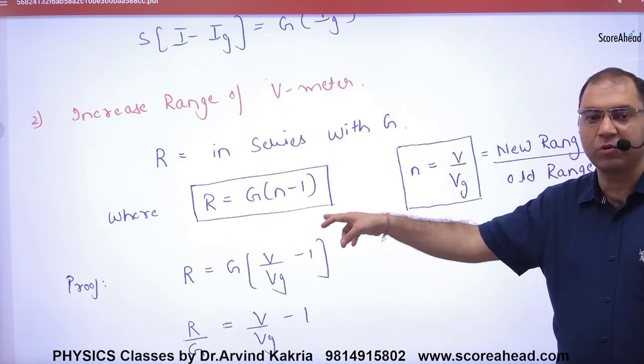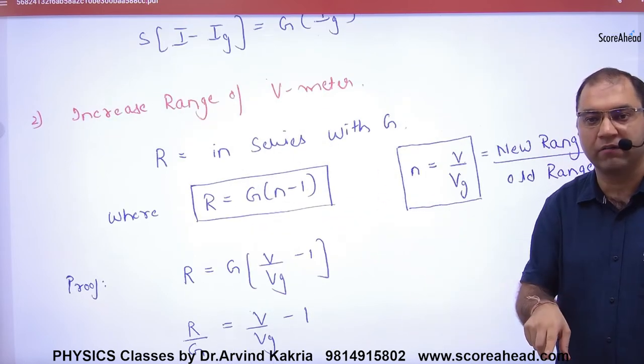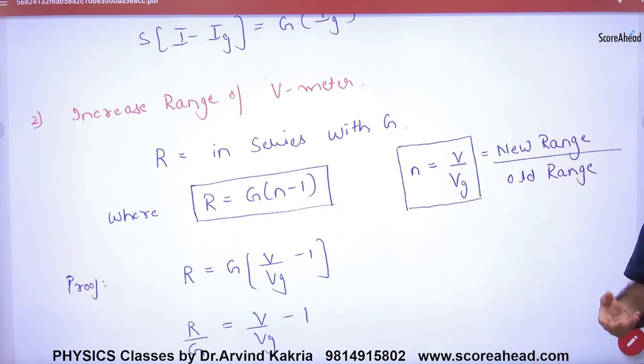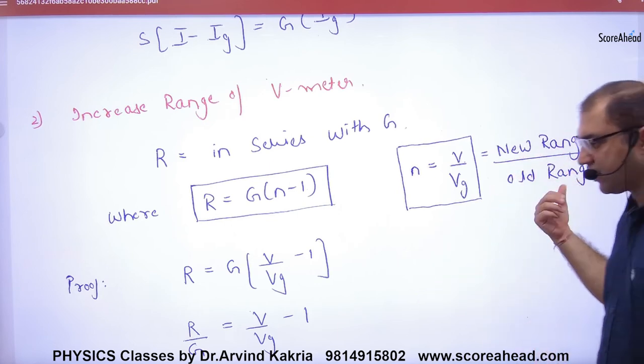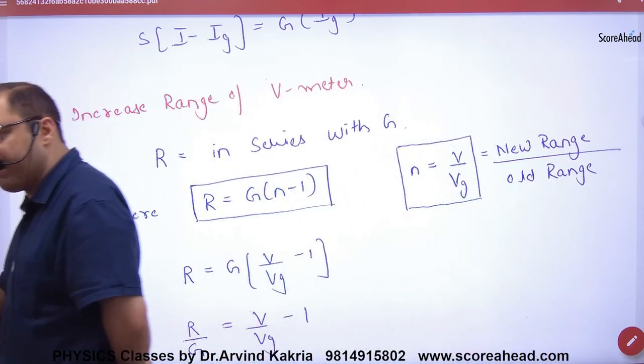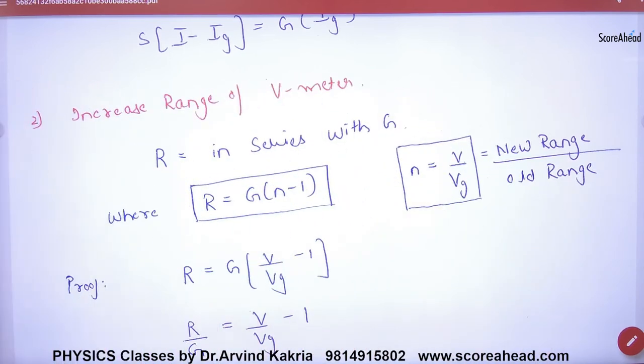But also, some books use G × (N-1), where N equals new range over old range. Old range means the galvanometer measure (VG), new means the voltmeter measure (V). So you can use these two formulas.